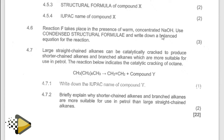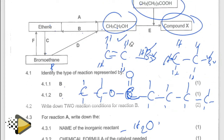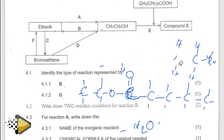Compound X takes place in the presence of warm water and concentrated sodium hydroxide. Use the condensed structural formula and write down the balanced equation for the reaction. So in this case, what are they looking at? They're saying reaction F. Basically, they are looking for you to write the balanced equation. From here to here — meaning that's just a reverse. So in this case, you just add sodium hydroxide.